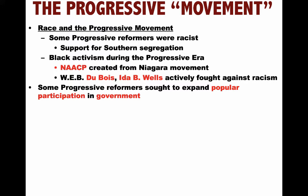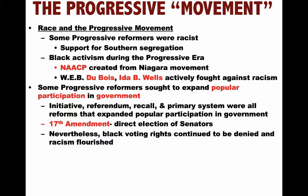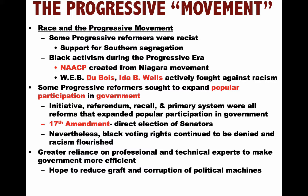Some Progressive Reformers sought to expand popular participation in government. Reforms such as the Initiative, Referendum, Recall, and Primary System all expanded popular participation in government. The 17th Amendment provided for the direct election of senators. Nevertheless, black voting rights continued to be denied and racism flourished. There was also a greater reliance on professional and technical experts to make government more efficient, with the hope of reducing graft and corruption of political machines in American cities.